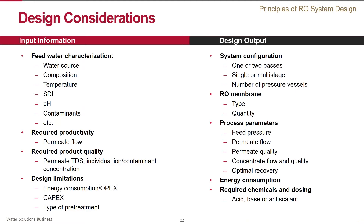Once all the necessary information is collected, the designer starts working on the optimal design by using projection software. The resulting design should provide the solution for the optimal configuration — for example, single versus double pass, number of pressure vessels, number of elements per pressure vessel, selection of the particular membrane model, its quantity, process parameters, feed pressure, energy consumption, and if necessary, required chemicals dosage.